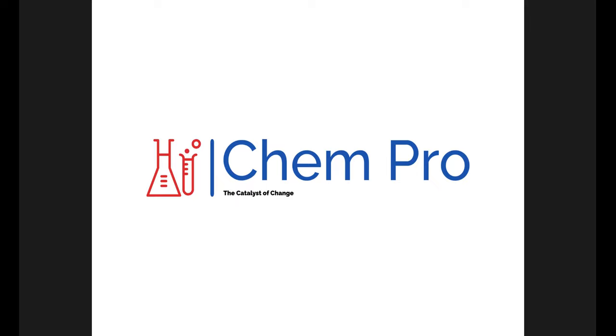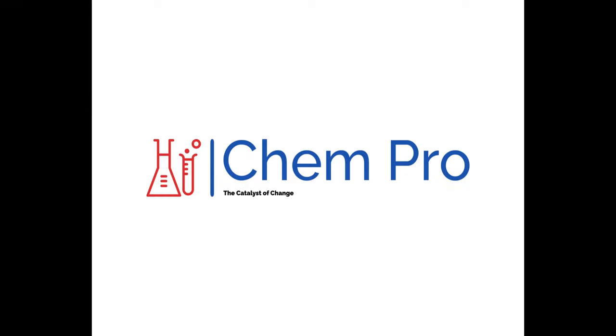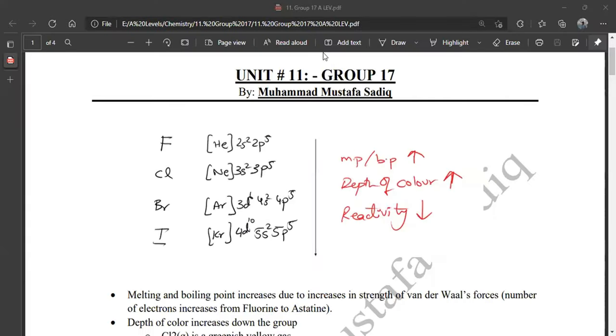Inorganic chemistry, third topic: Group 17. Starting with Group 17, you can see as usual there are elements like Fluorine, Chlorine, Bromine, and Iodine. And there are electronic configurations.